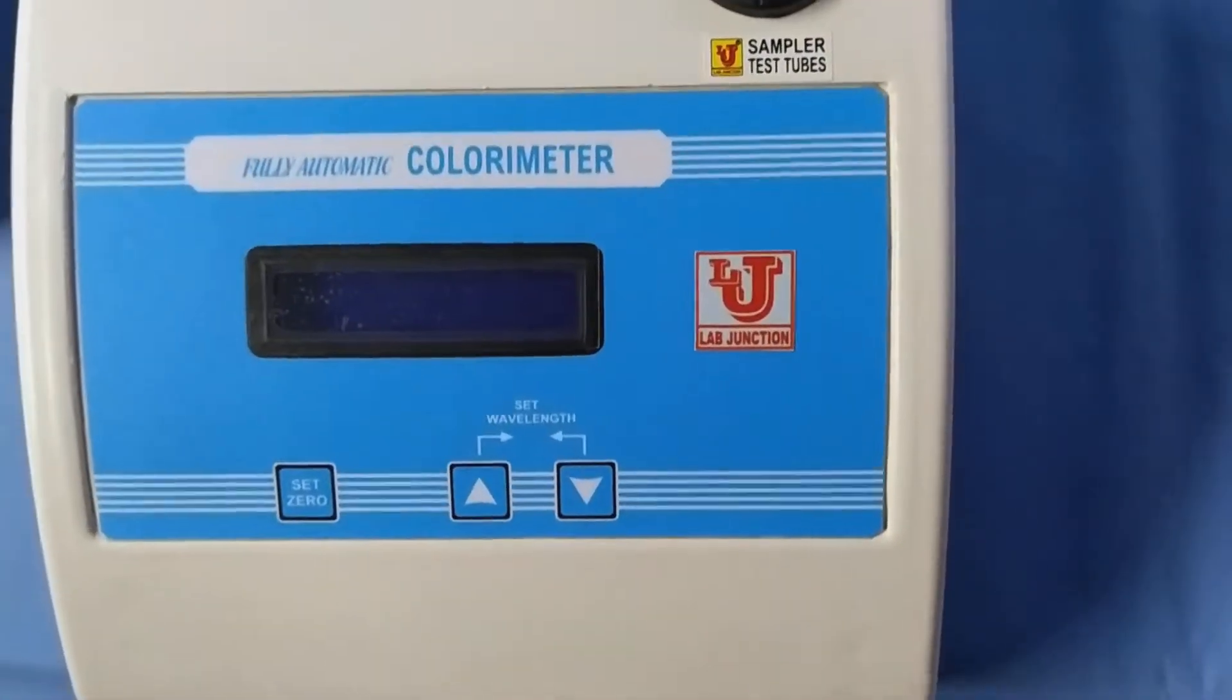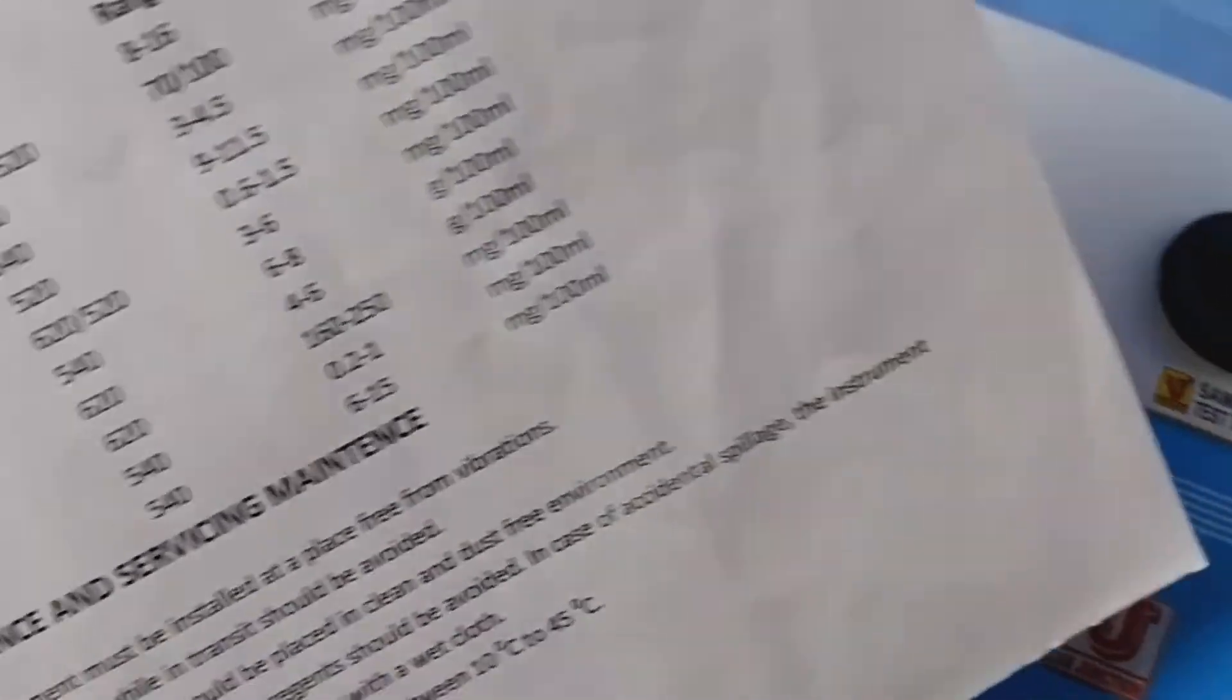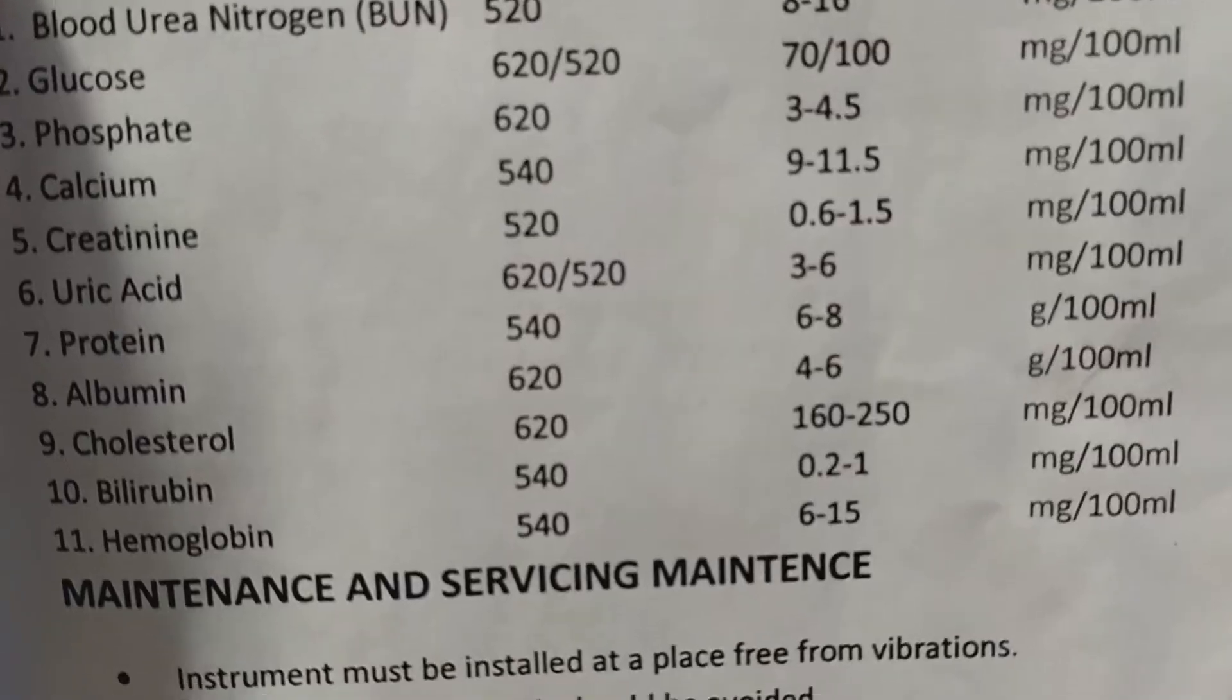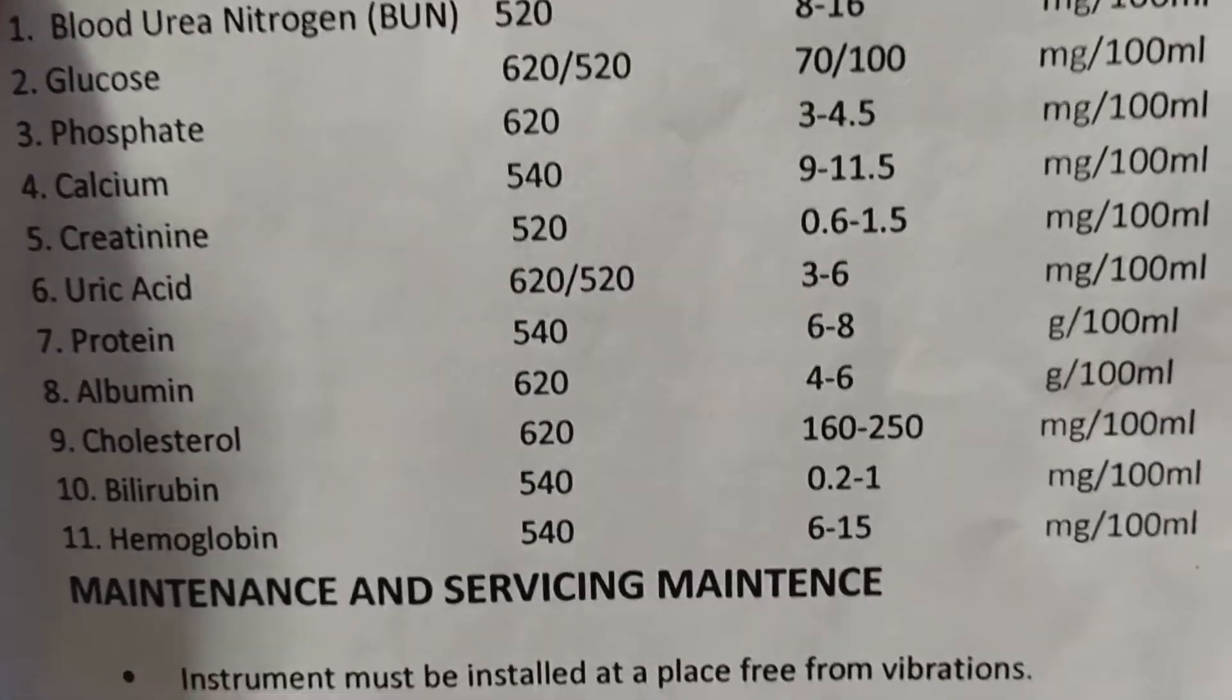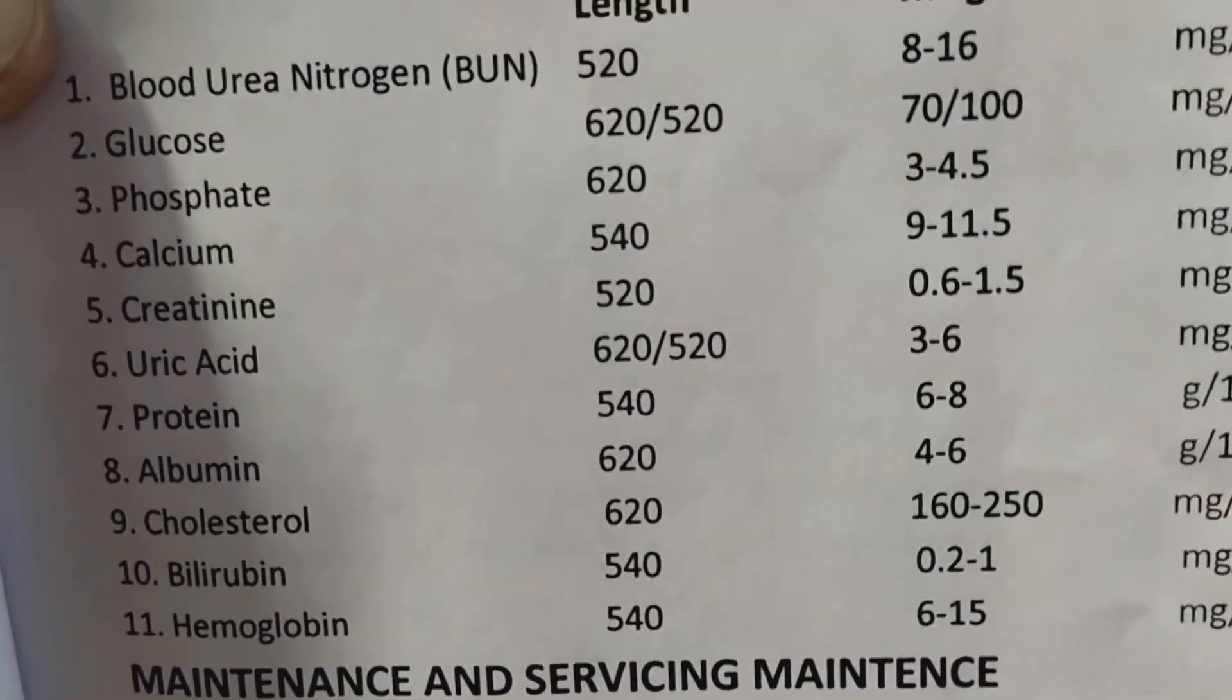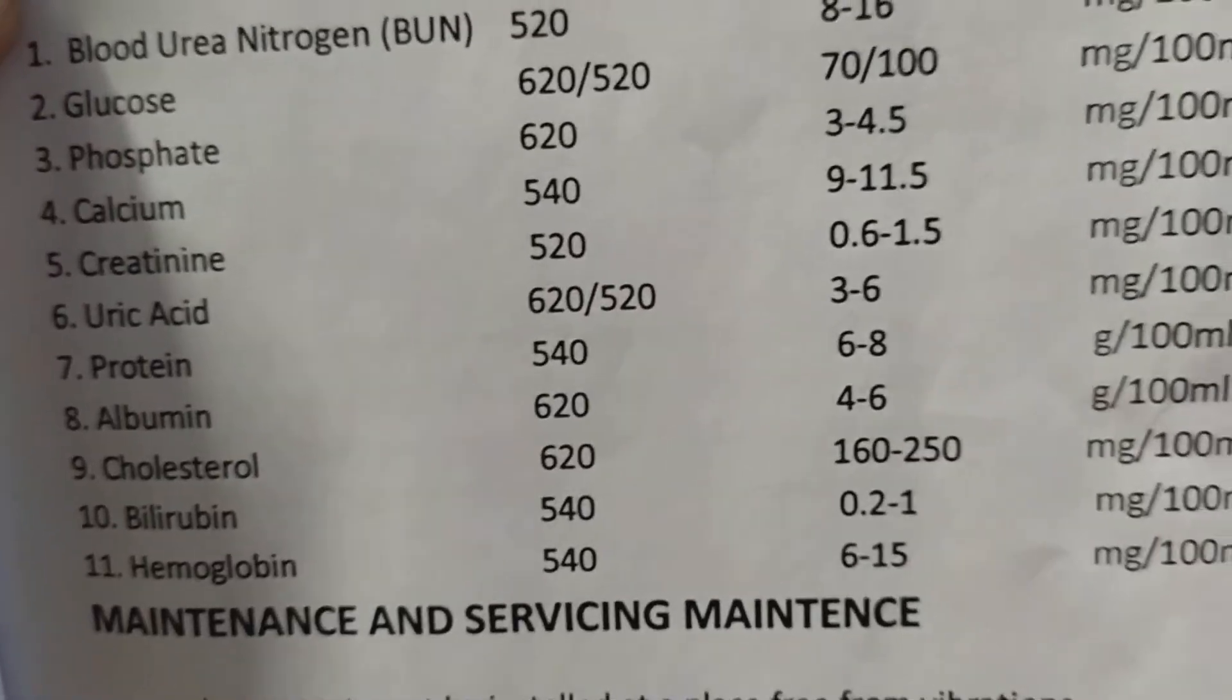With this colorimeter, we can do 11 types of tests of blood chemistry. That are blood urea nitrogen, glucose, phosphate, calcium, creatinine, uric acid, protein, albumin, cholesterol, bilirubin, hemoglobin.